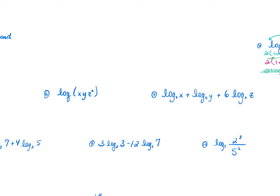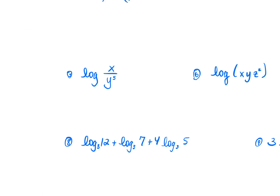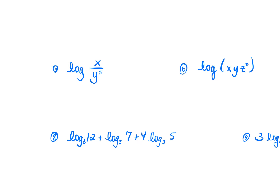For example 5: log(X/Y⁵). Division means subtraction, so this becomes log(X) − log(Y⁵). That power becomes a coefficient, giving log(X) − 5·log(Y).